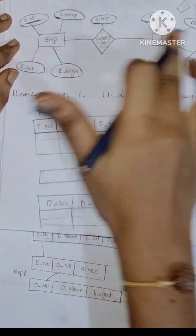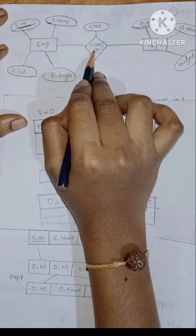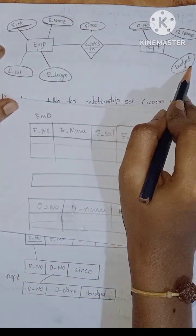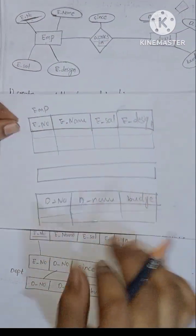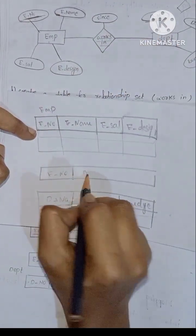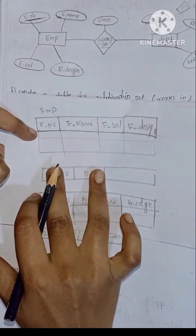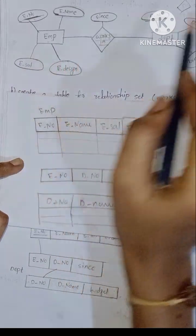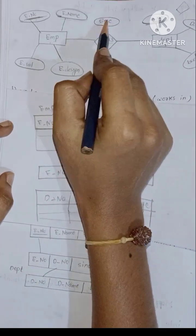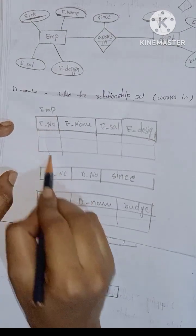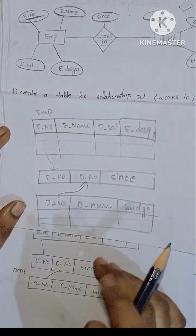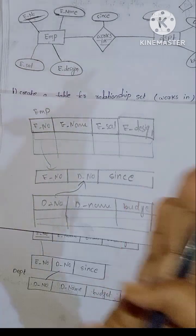If you have a relationship with the employee, you can find the department name, employee number, and budget. Employee ID is declared as a foreign key in the relationship table. This shows the foreign key relationship linking the employee table and the department table.